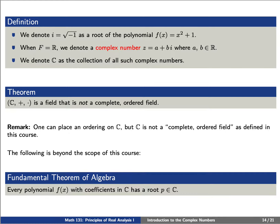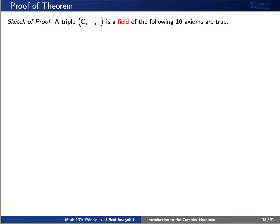The following proposition is far beyond the scope of this course, but it explains why we introduced the complex numbers to begin with. The fundamental theorem of algebra states that every polynomial, not just the odd degree ones, which have coefficients in C, have a root p in C. We'll give a sketch of the proof of this theorem.